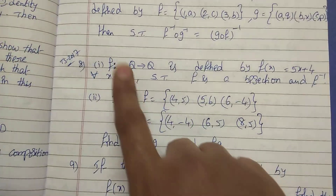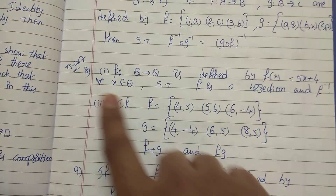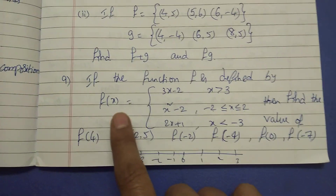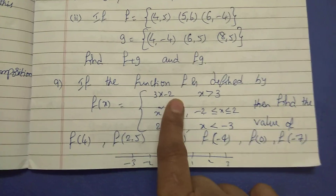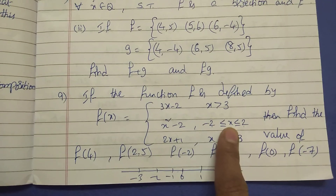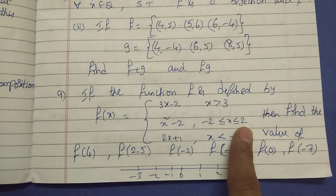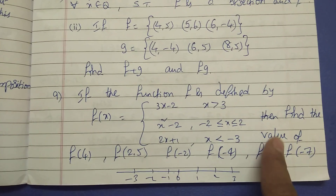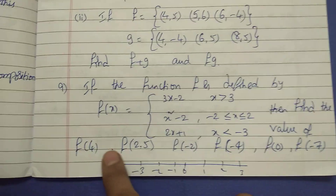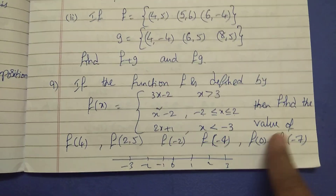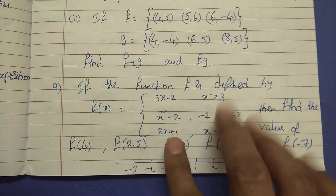E model is equal to 2017. Next E model: 3x minus 2 for x in range minus 2 to 2, x squared for less than or equal conditions, and 2x plus 1 for x less than minus 3. Then find the value of F of 4, F of 2.5, F of minus 2.